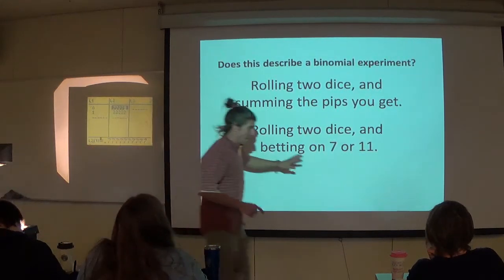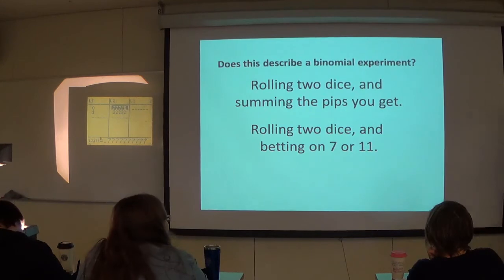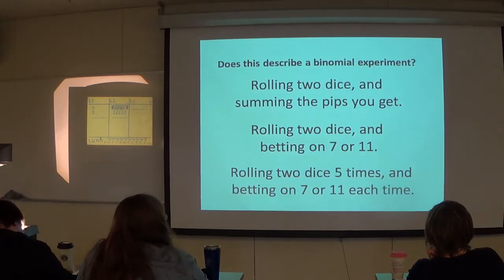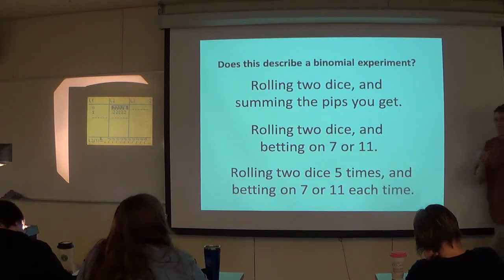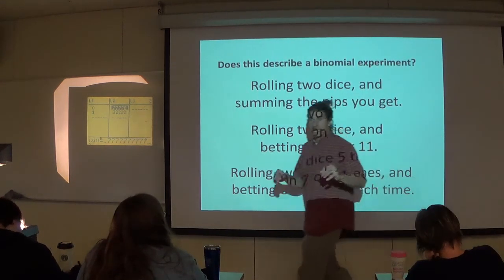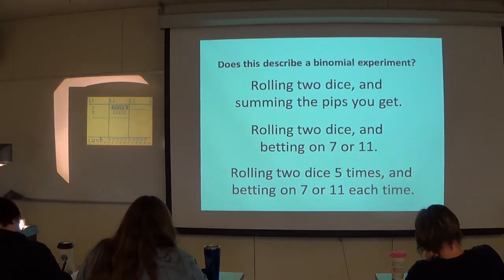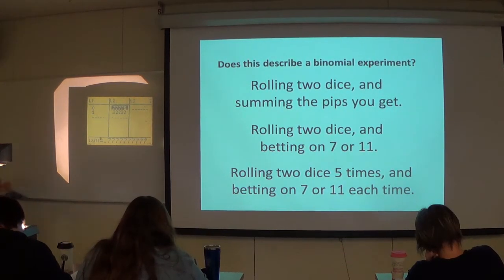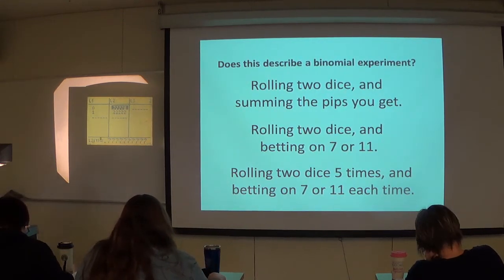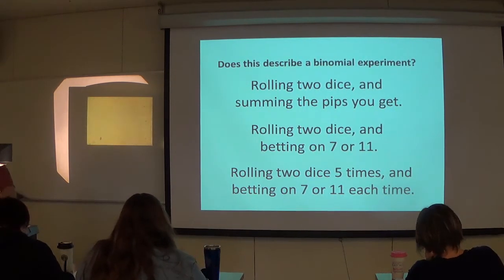This next one: do that exact same thing but do it five times. So in other words, we're not going to play the game just once now — we're going to play this game five times. Roll the dice, bet on seven or 11, see what happens. Roll the dice, bet on seven or 11, see what happens.